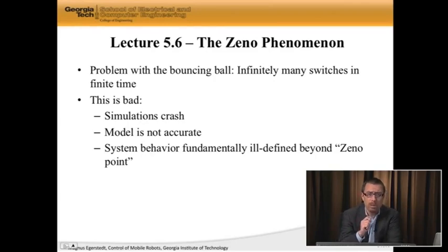But fundamentally, what I would like to point out is that Zeno is bad. Because if you're actually running something that's asked to do an infinite amount of things in finite time, it crashes. If you're running this on a computer, the simulations crash. Another thing is that we know that there is something inaccurate or something wrong with our model, because the ball, if I drop a ball, it doesn't bounce an infinite number of times.